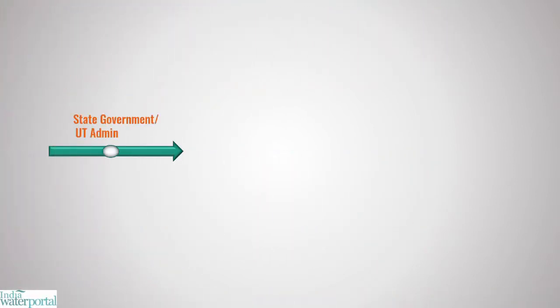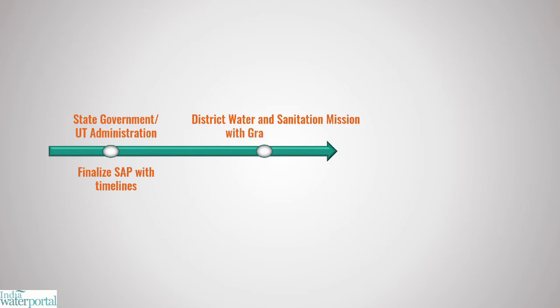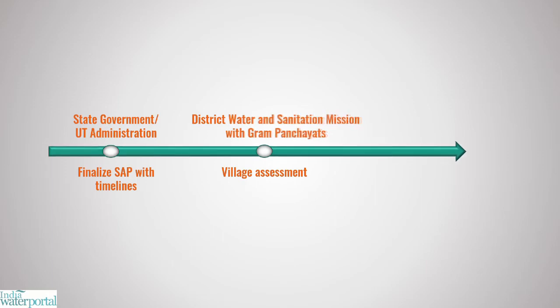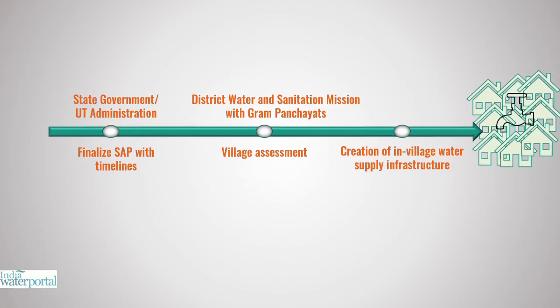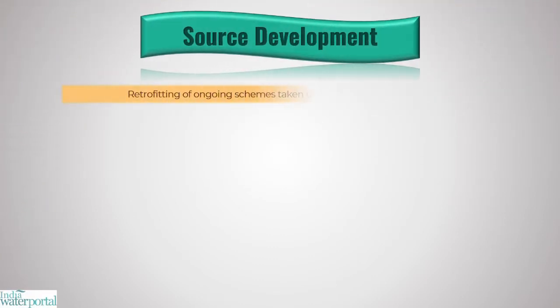State Governments and Union Territory Administrations will implement the mission based on the finalized State Action Plan with timelines to cover all villages. Each village will be assessed on existing water supply infrastructure by the District Water and Sanitation Mission in consultation with the Gram Panchayat or its subcommittee. Based on the same, FHTCs will be provided by creating in-village water supply infrastructure including source development, under criteria such as retrofitting of ongoing schemes under the erstwhile National Rural Drinking Water Program for last-mile connectivity.